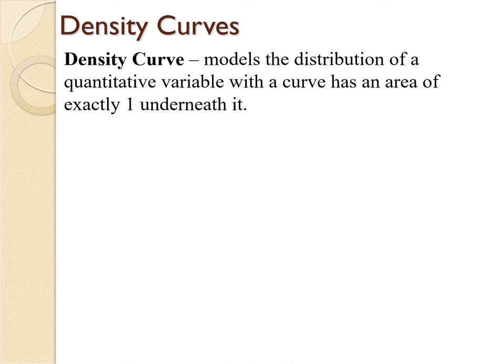When we're talking about a density curve, we're talking about a distribution of a quantitative variable, meaning a numerical variable, that has a curve with an area of exactly one underneath it. The nice thing about a curve that has an area of exactly one is we can slice it up into portions based on its area and find out what proportion or percentage of data falls in a certain section.